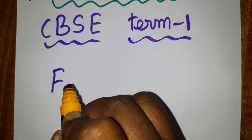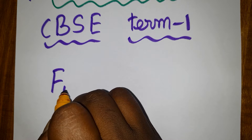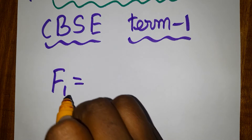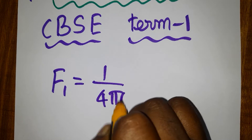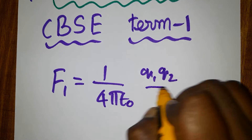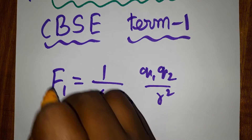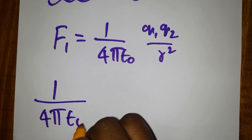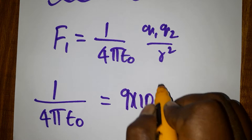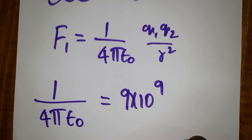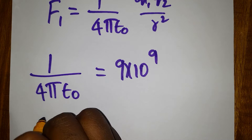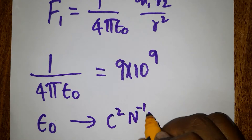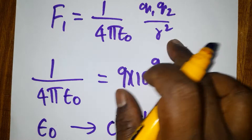The first formula is the force of attraction or repulsion between two charges, called Coulomb's force: F = (1/4πε₀)(q1q2/r²). The constant 1/4πε₀ equals 9×10⁹. The unit of ε₀ is coulombs squared, newton inverse, meter minus 2.